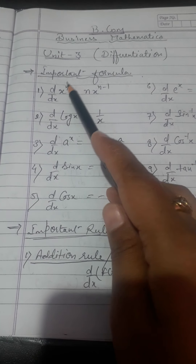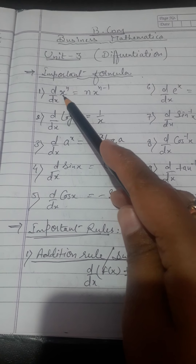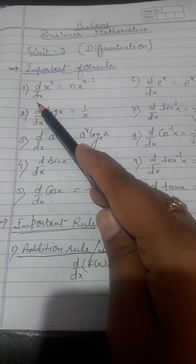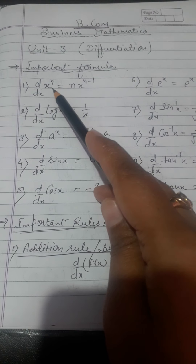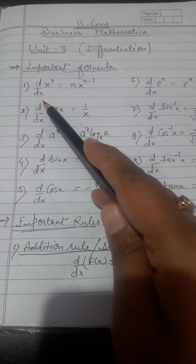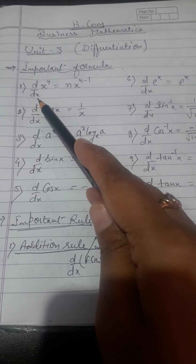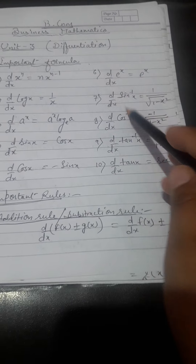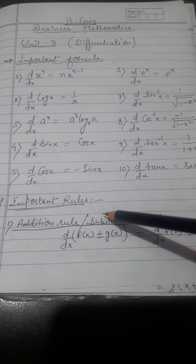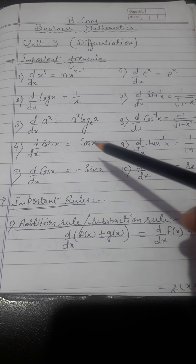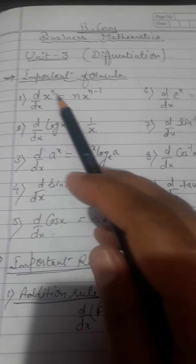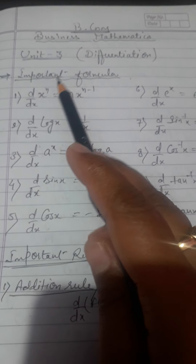That means we are taking differentiation of this function with respect to a variable x. So any function can be differentiated if we are taking differentiation with respect to a variable. So here we are taking the differentiation of this function with respect to x.